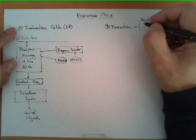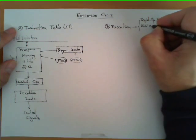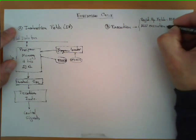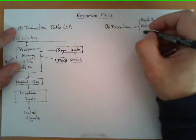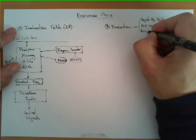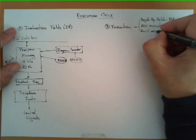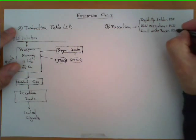The second sub-stage that occurs is the ALU execution, which we'll abbreviate simply as ALU. And the third one is result write-back, which we call RWB.